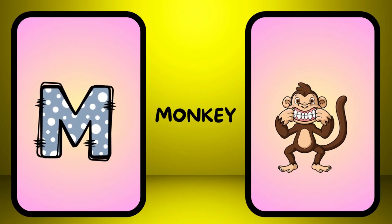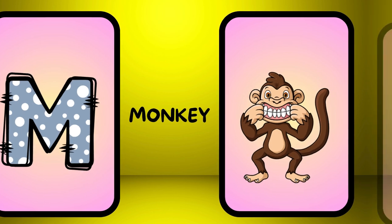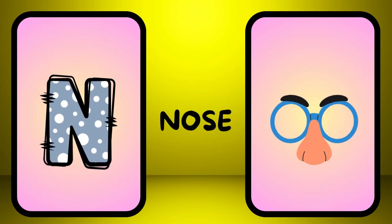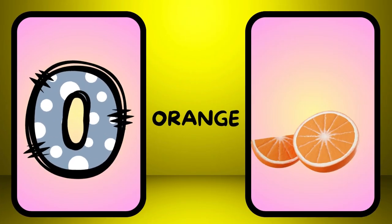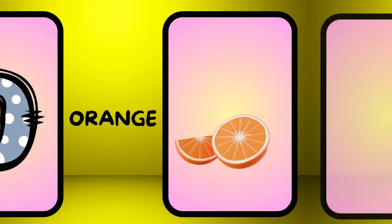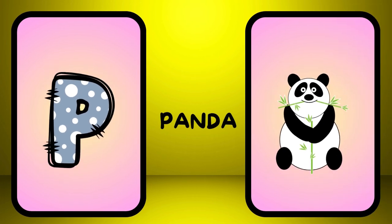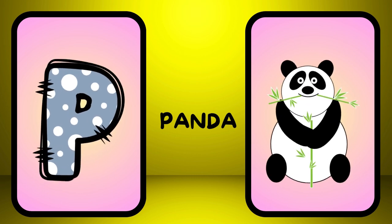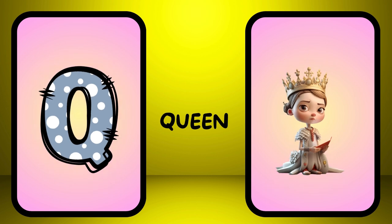M is for monkey, m-m-monkey. N is for nose, n-n-nose. O is for orange, o-o-orange. P is for panda, p-p-panda.